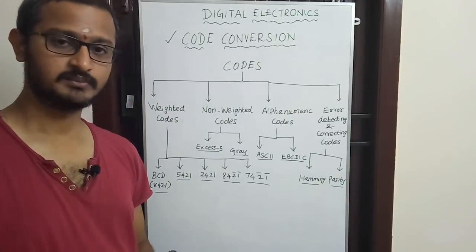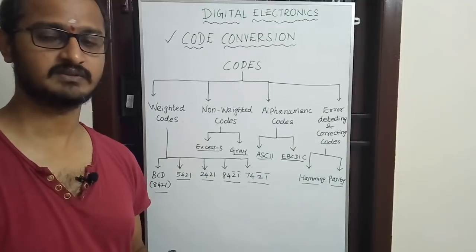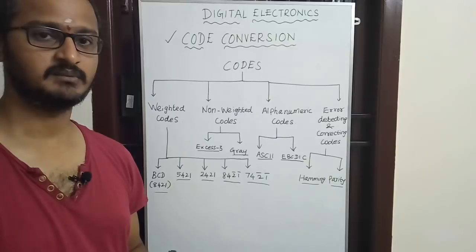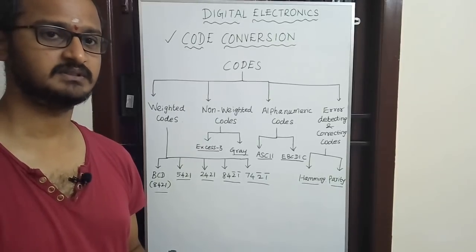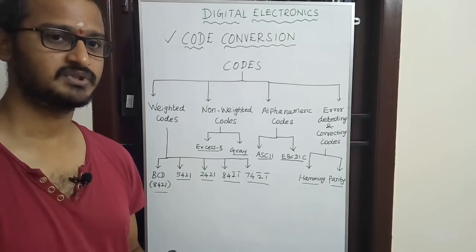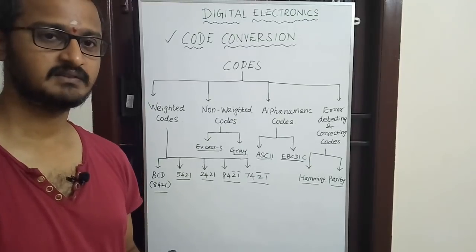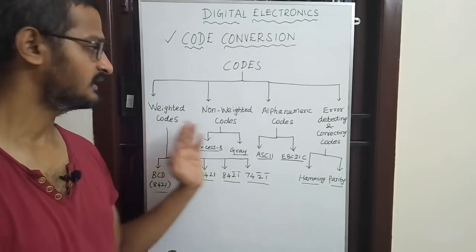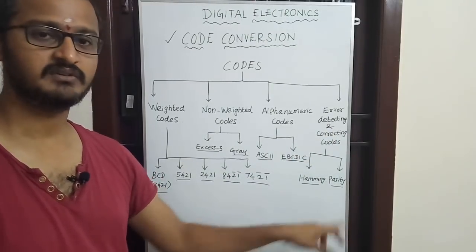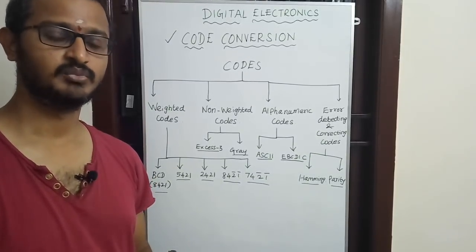Why do we use codes? Normally we have binary bits — 0s and 1s — which represent the transfer rate. Binary numbers are grouped together. Since there is no security in raw binary, we went for some coding. Error correcting and detecting codes like Hamming and Parity are widely used today.